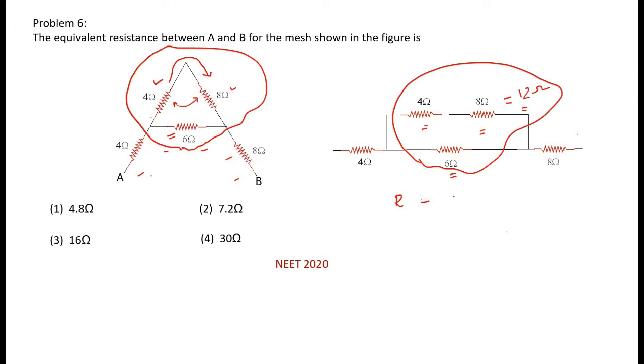So effective resistance is 12 into 6 by 12 plus 6, which is 72 by 18, equals 4 ohm for this.